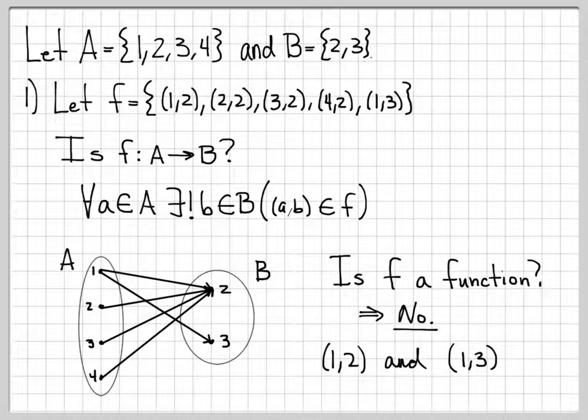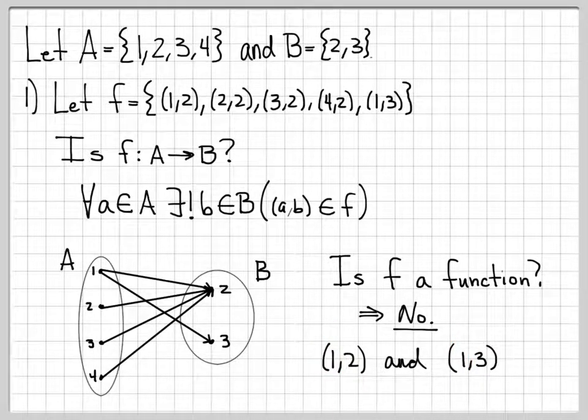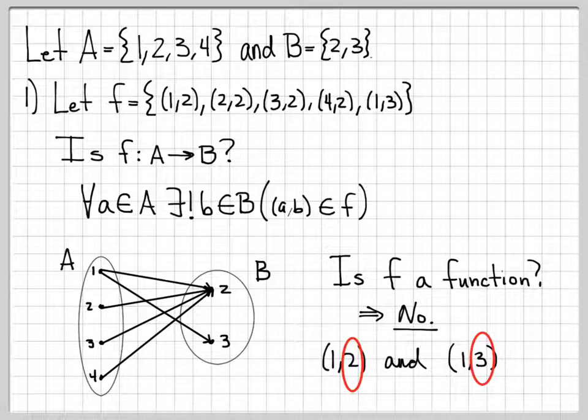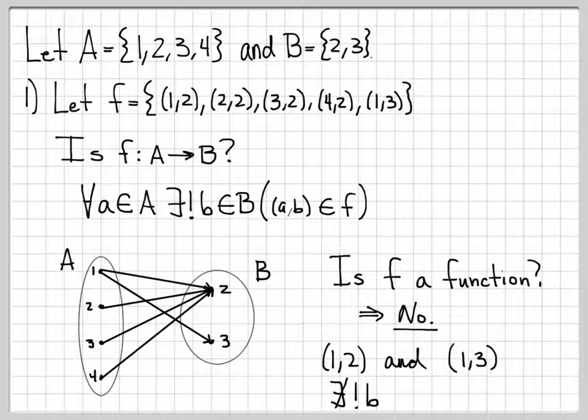If you look at the definition of a function, it says for every a in A, there has to be exactly one unique b in B such that (a,b) is in F. Well, we have (1,2) is in F and (1,3) is in F. So in this case, a is 1. It pairs up. We have a 1 in each of these cases. But the definition says we can only have a single b. Well, we have 2 here. We have the element 2 and the element 3. There's not a unique b in B. There are actually two values of b.